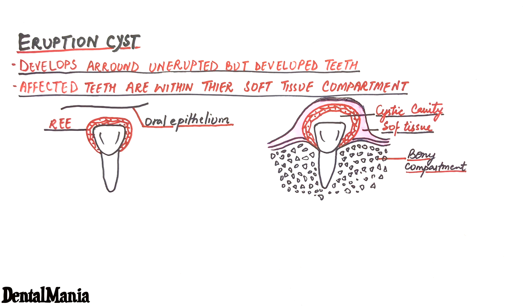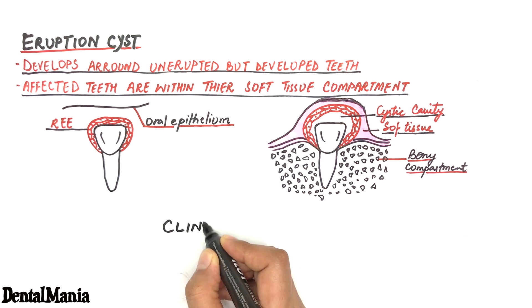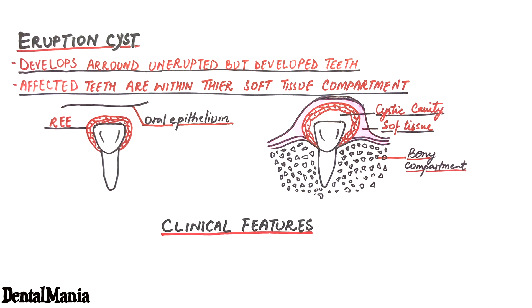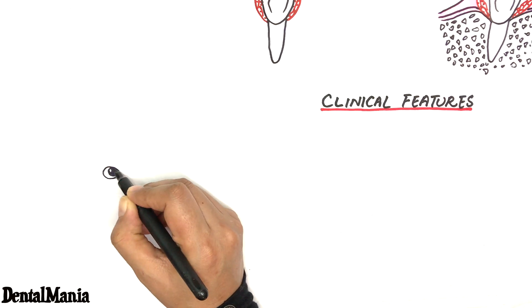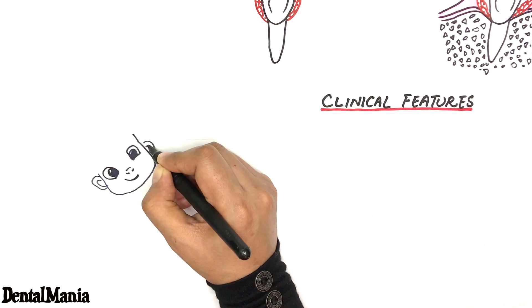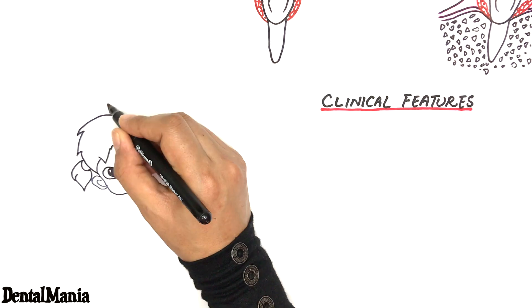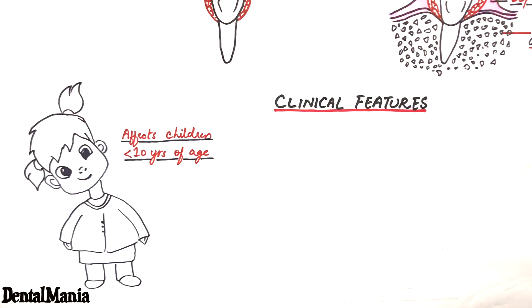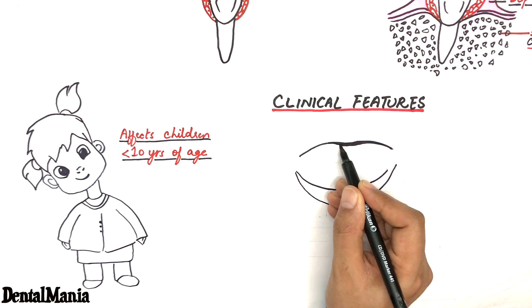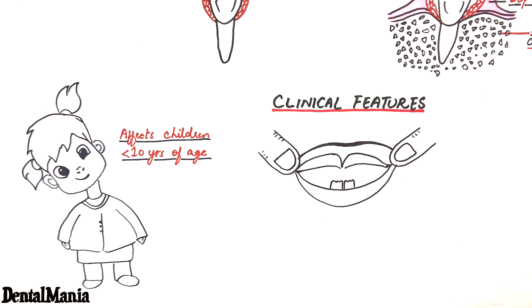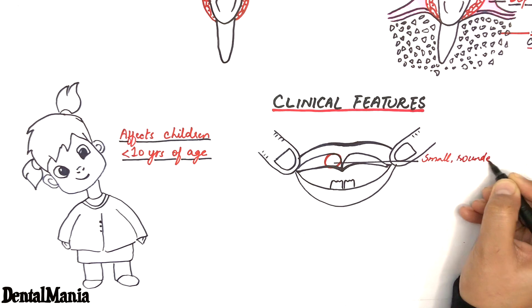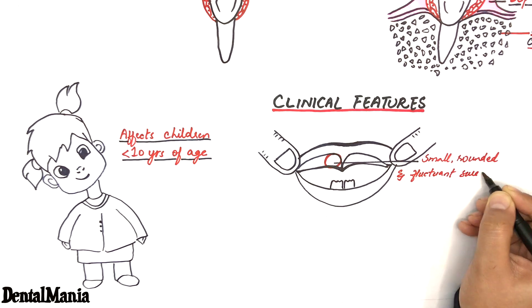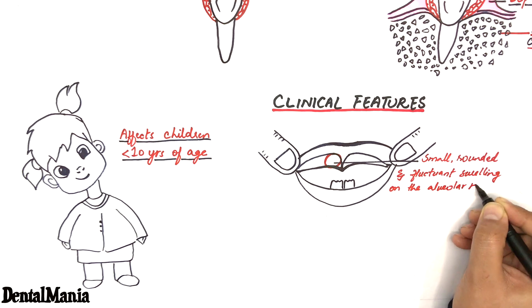For further details on dentigerous cyst, please watch my previous video on it. Coming to some clinical features of the cyst, the cyst may arise in children below the age of 10. The cyst appears as a small, rounded, and fluctuant swelling present on the alveolar ridge having a translucent hue.